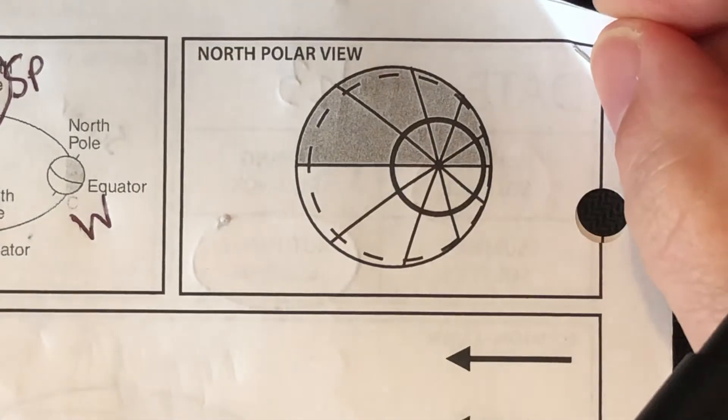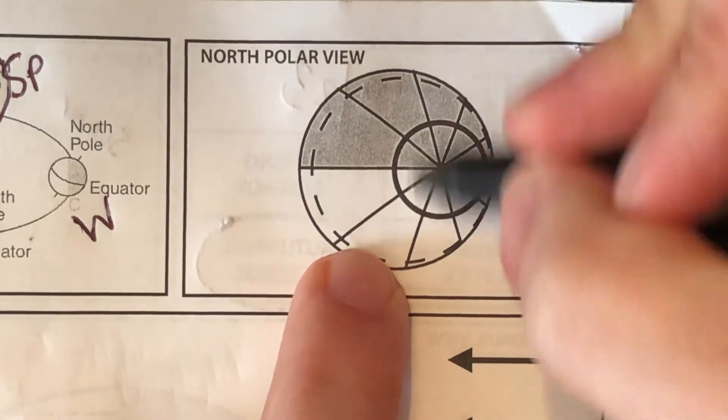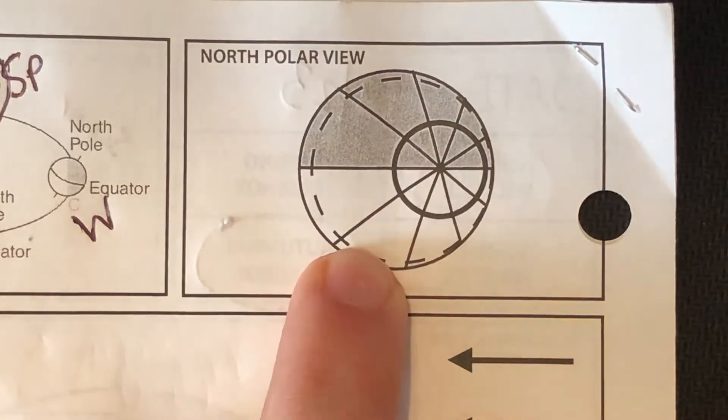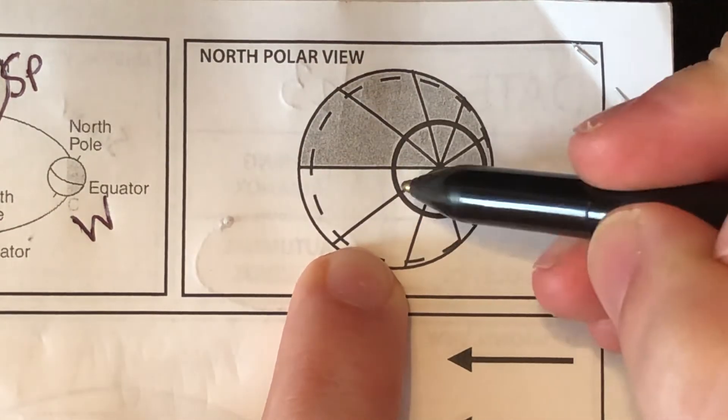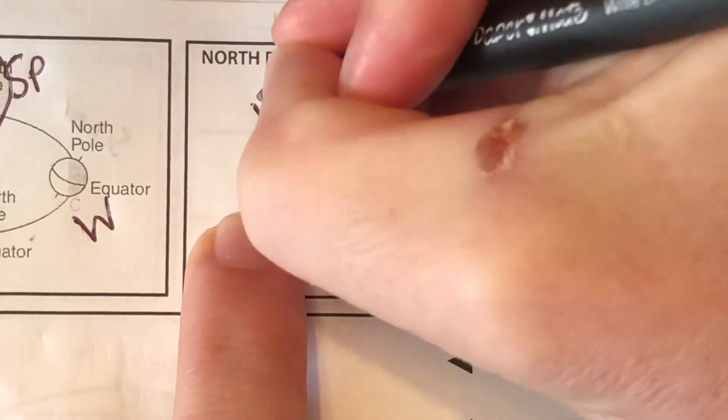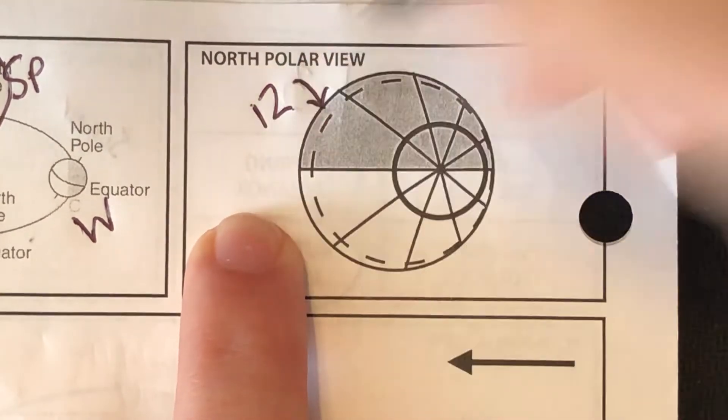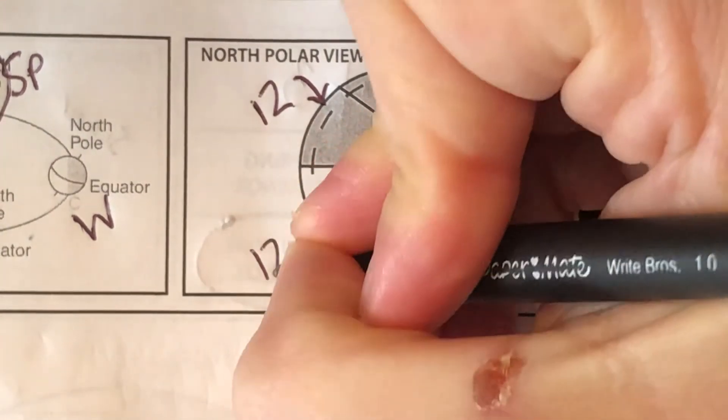Again, I know that this is an equinox. I can't tell you which one it is. Obviously, I know we're doing spring right now. But if this was a standalone picture, I just know that it would be an equinox because you get 12 hours of darkness and you get 12 hours of daylight.